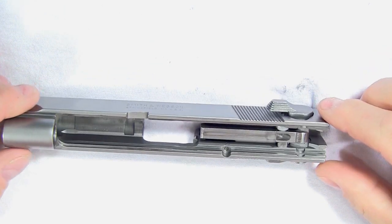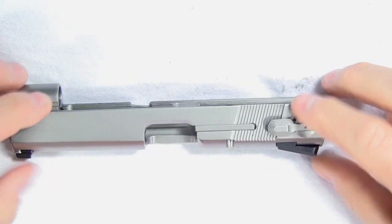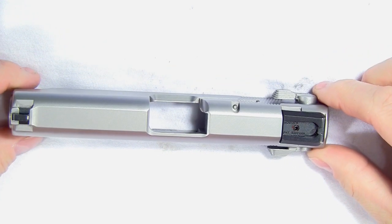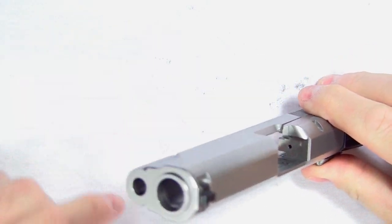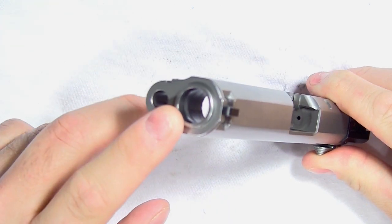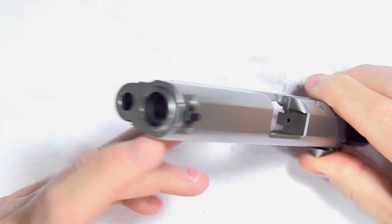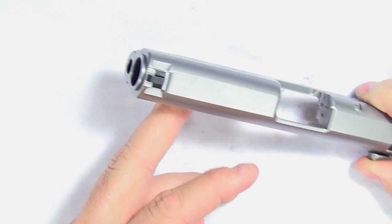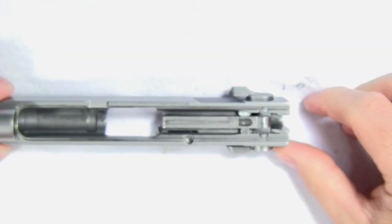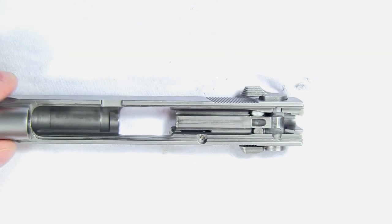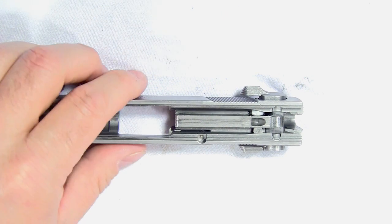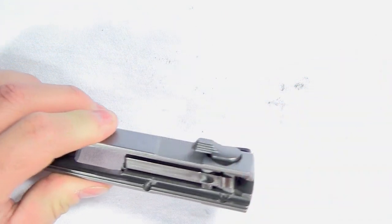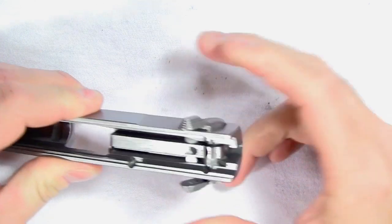Okay, in this video we are going to break down the slide all the way to where nothing is left on it except for the bushing and the front dovetail sight. The first thing we're going to do is remove the firing pin retainer and the safety lever. First, set the slide on a flat surface.